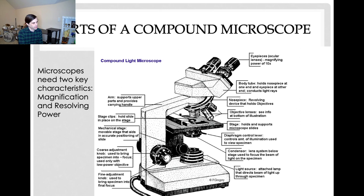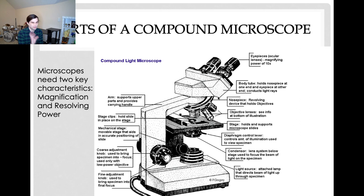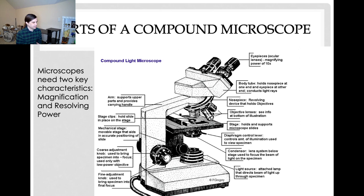The eyepieces at the top usually have a magnification power of about 10 times. Then you have the body tube that holds everything together, and the arm which connects the base to the top — that's also where you carry it. Attached to the body tube is the nosepiece, which spins around so you can change the objective lens in focus. The objective lenses are connected to the nosepiece — they click into place and you can go from the scanning objective, to the low power, to the high power, to the oil objective.